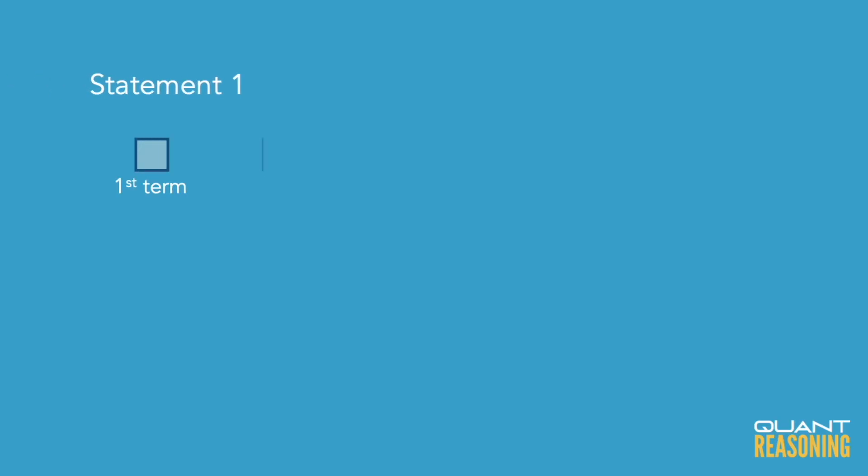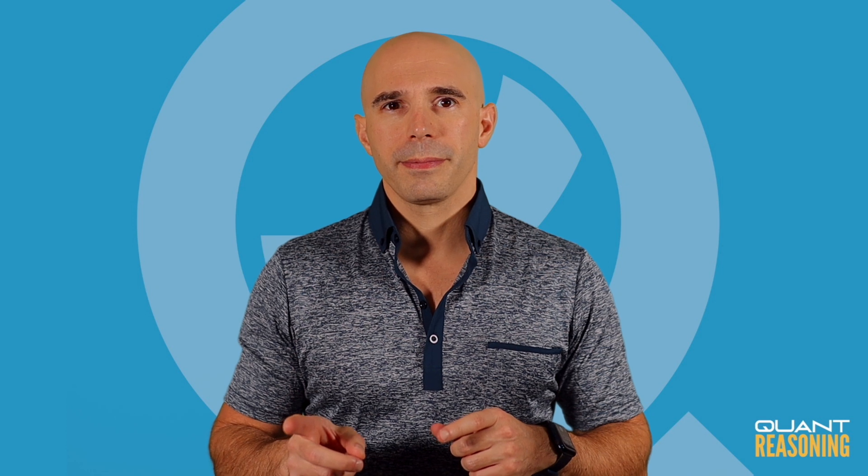Now statement one tells us that the sum of the first three terms is six. But pause there for a moment and ask yourself: given what we know about the sequence, if the sum of the first three terms is six, what can we infer?